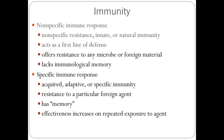Regarding immunity, there are two types of immune response. Number one is non-specific immune response — more universal. Number two is specific immune response. Non-specific immune response means they are not specific in their resistance. Natural microorganisms in our bodies provide natural immunity — the first line of defense. They offer resistance to any microorganism or foreign material, but they do not have strong immunological memory ability. White blood cells have a defense system; macrophages will start to work, but may not be very effective, and they do not have immune memory — the second time something happens, they respond the same way.